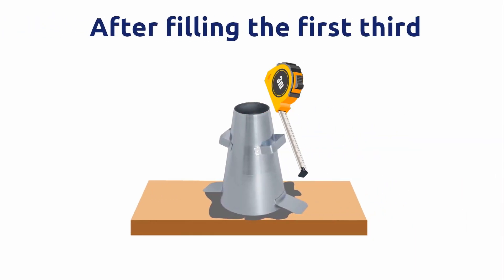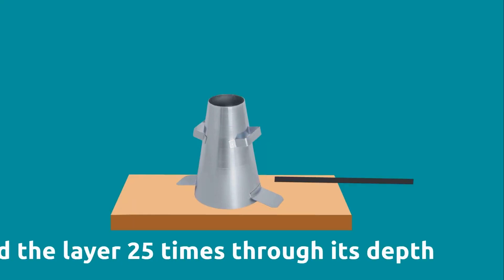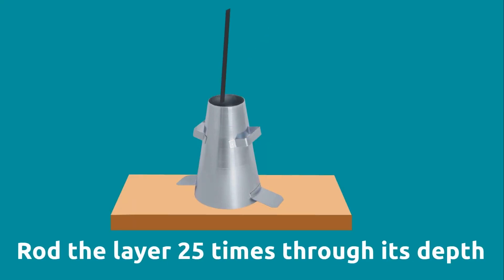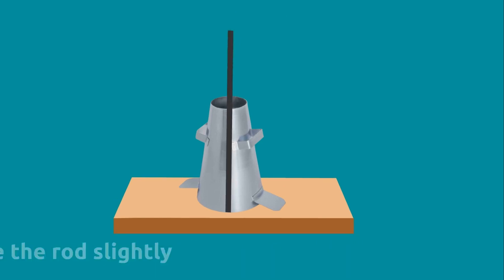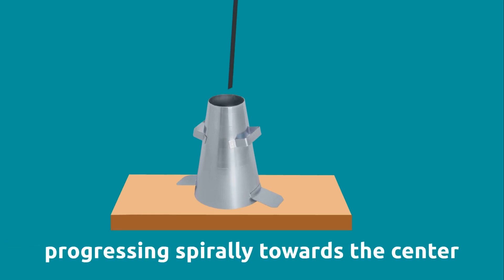After filling the first third, approximately 2 and 5/8 inches of the cone by volume, rod the layer 25 times through its depth, uniformly distributing the strokes over the cross section of the layer. Incline the rod slightly, starting near the perimeter and progressing spirally towards the center.